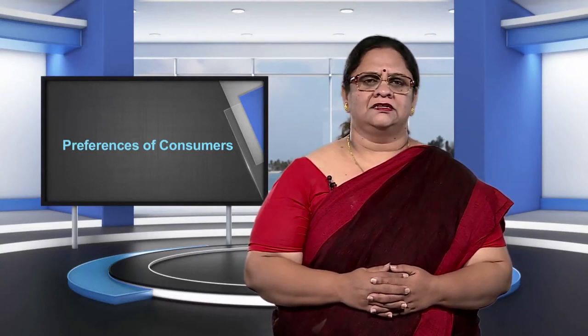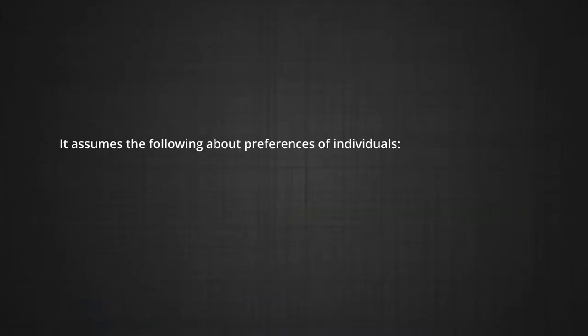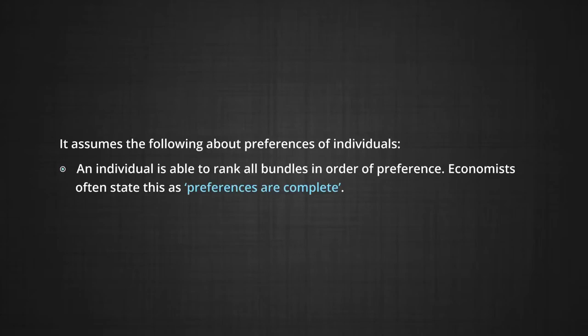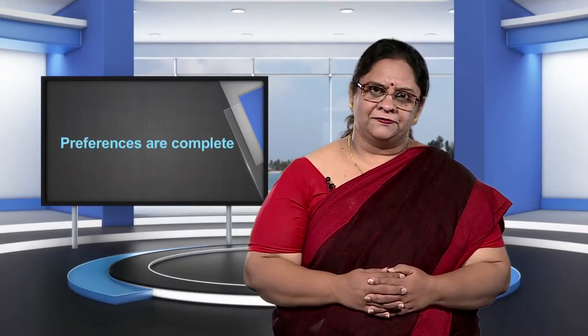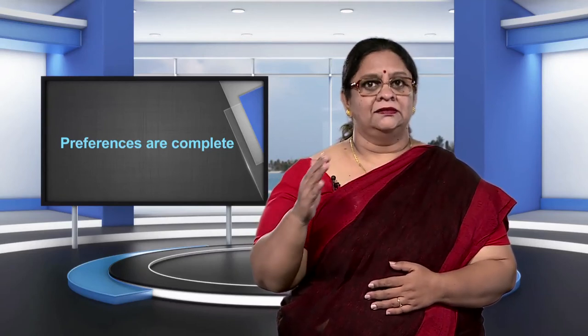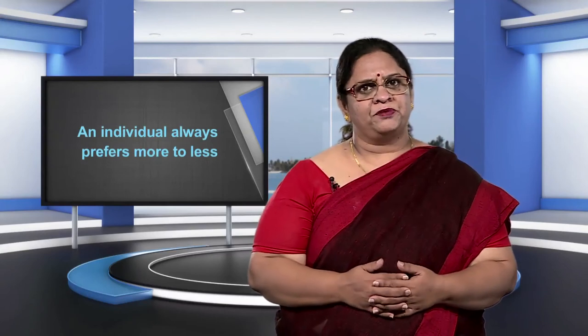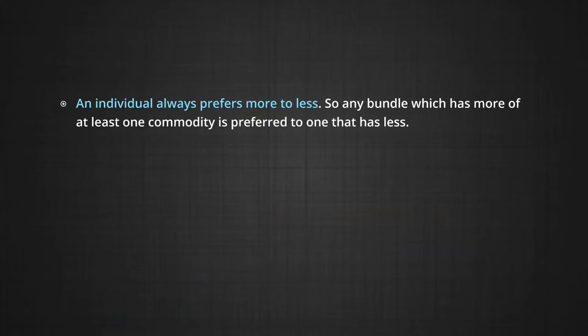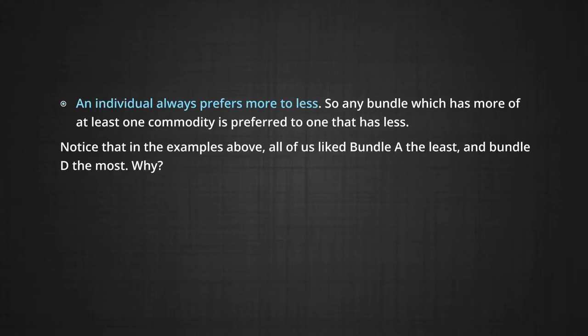Indifference curve theory uses these intuitive ideas to analyze a consumer's preferences. It assumes the following about the preferences of consumers. One, an individual is able to rank all bundles in order of preference — economists often state this as preferences are complete. So I may like some bundles more than others and some bundles as much as others, but I can always draw up a complete ranking. Two, an individual always prefers more to less, so any bundle which has more of at least one commodity is preferred to the one that has less.